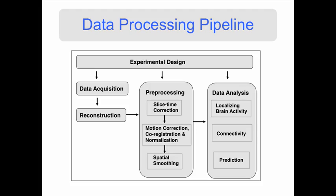In the second week, we'll talk about experimental design and preprocessing. fMRI data needs to be massaged a little bit before it's ready for statistical analysis, and that's what the preprocessing step is all about.